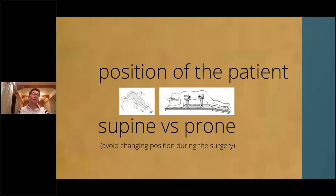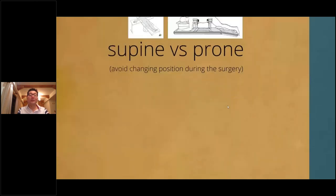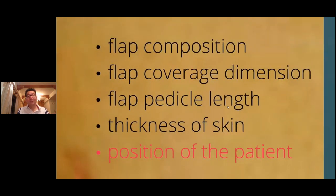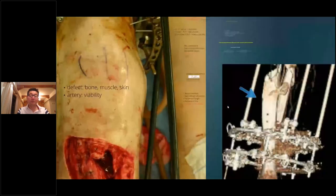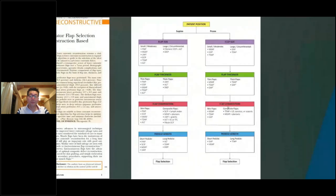And finally, during surgery, there is sometimes prone position, there's supine position. Sometimes if the defect's in the back, we have to do prone. I don't like to change patient position because we know that complications increase to about 10 to 18%. So we try to avoid changing the patient position at all. We looked at our 563 cases of perforator flaps and came up with this algorithm: patient position — front or back; then flap size; then flap thickness; flap composition; and finally, pedicle length.